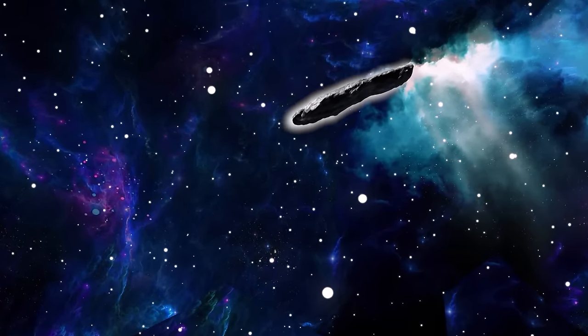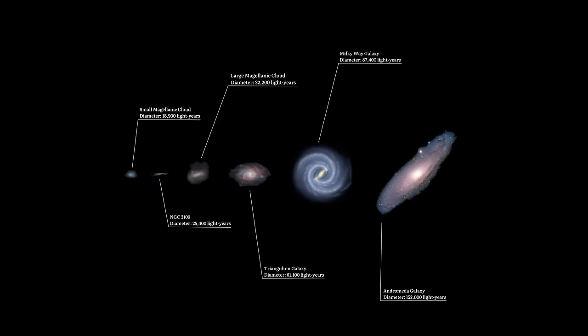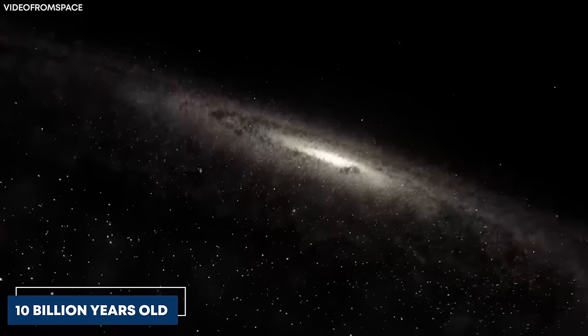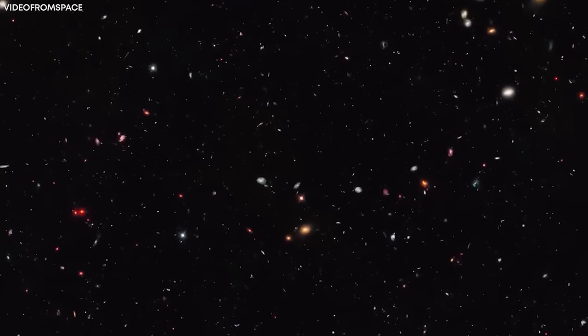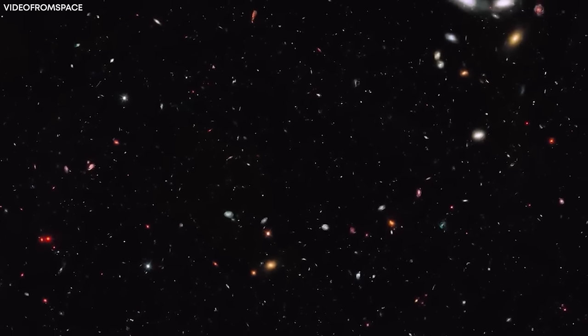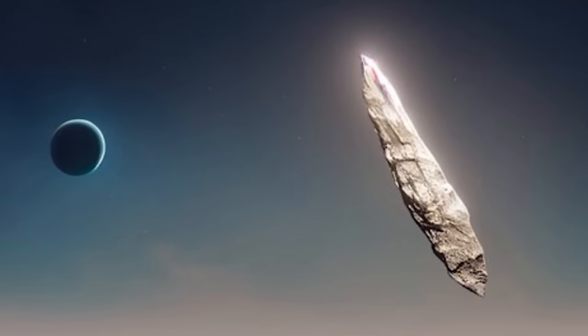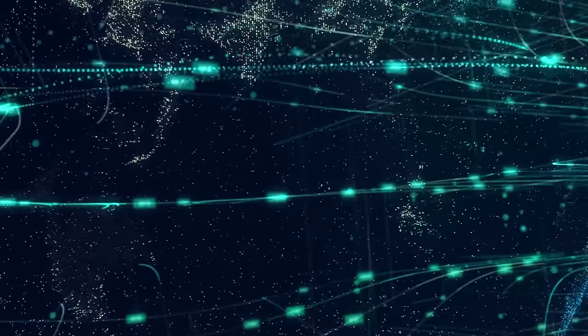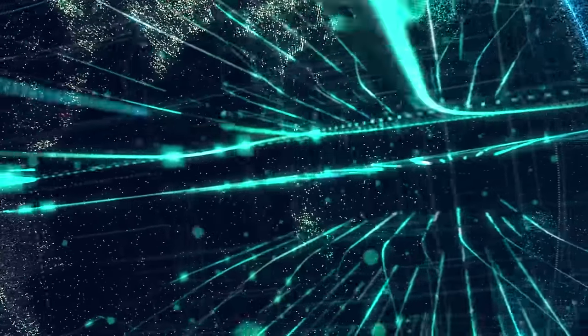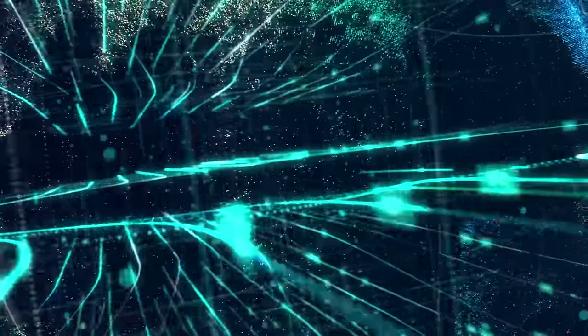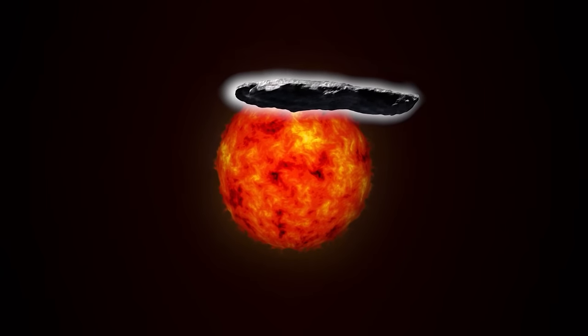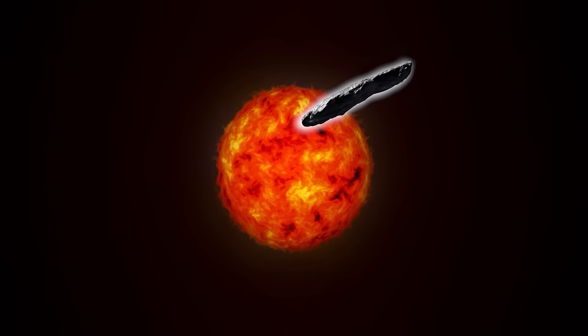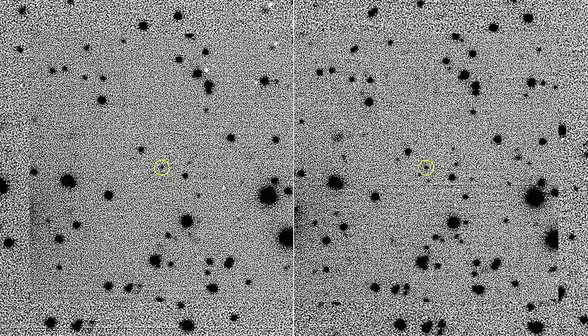While this may sound like an immense time frame, it is relatively short compared to the estimated age of our galaxy, which is around 10 billion years old, and contains a staggering 200 billion stars. Astronomers believe that Oumuamua's encounter with our solar system might be its first interaction with a new star system, considering the duration of its journey through space. This hypothesis is supported by its movement past the Sun at a speed similar to neighboring stars.